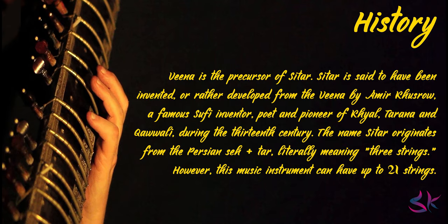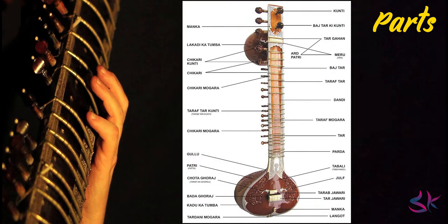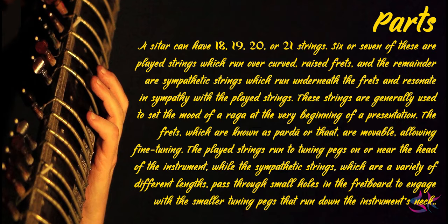However, this instrument can have up to 21 strings. A Sitar can have 18, 19, 20 or 21 strings. Six or seven of these are playing strings which run over curved raised frets, and the remainder are sympathetic strings, also known as Tarb, Tarif, or Tarafdar, which run underneath the frets and resonate in sympathy with the playing strings. These strings are generally used to set the mood of a Raga at the very beginning of a presentation.